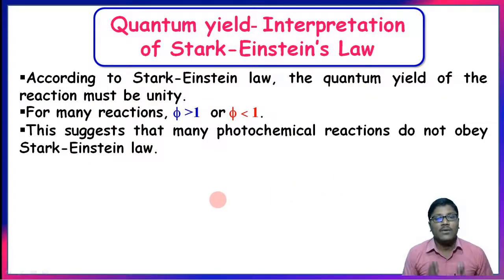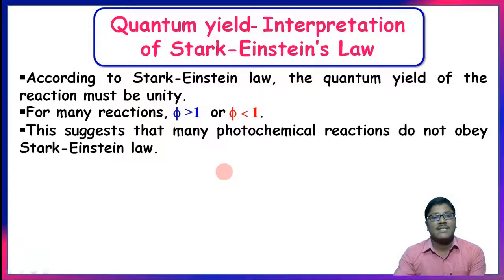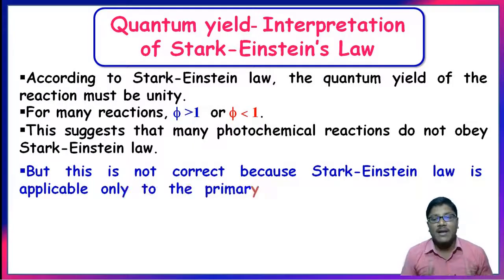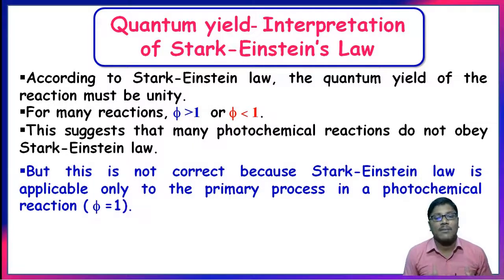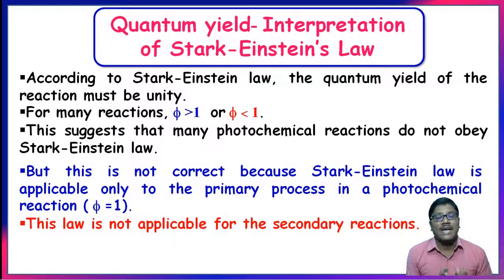According to Stark-Einstein's law the quantum yield must be unity, but we observed that for many reactions φ is either greater than or less than 1. This might suggest those reactions do not obey Stark-Einstein's law. However, Stark-Einstein's law is applicable only to the primary process in a photochemical reaction, for which φ = 1, and is not applicable to secondary reactions.